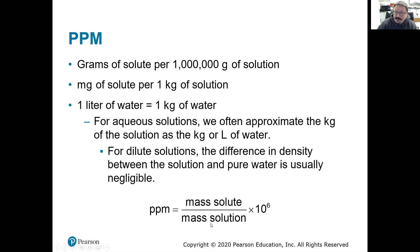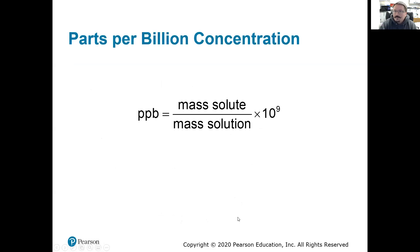For parts per million: mass of solute over mass of solution — ideally the units agree. If we have mass and volume, we'd need density to convert. We take that ratio and multiply by one million to get parts per million. Parts per billion works the same way for smaller amounts — how many parts of solute per billion parts of solution — multiply by one billion. We'll do a few worked examples so this makes more sense.